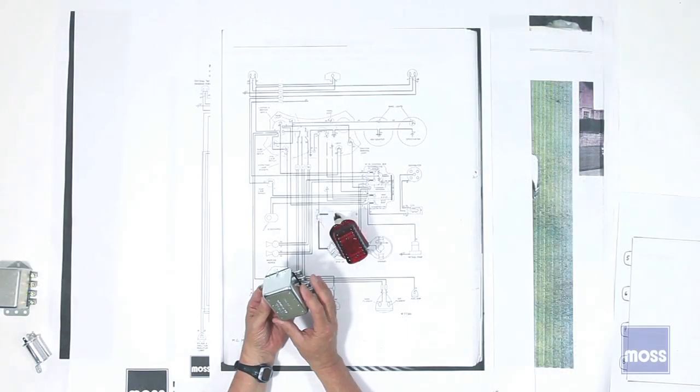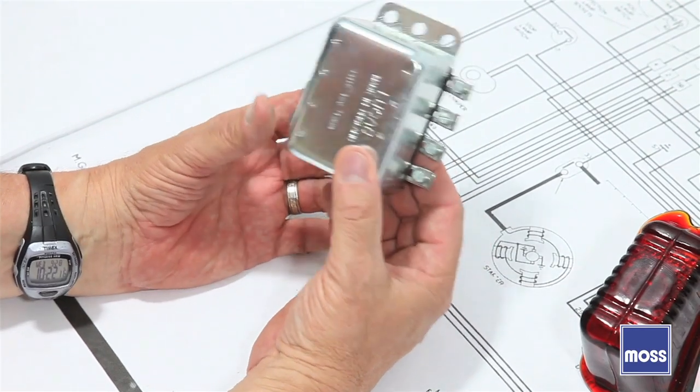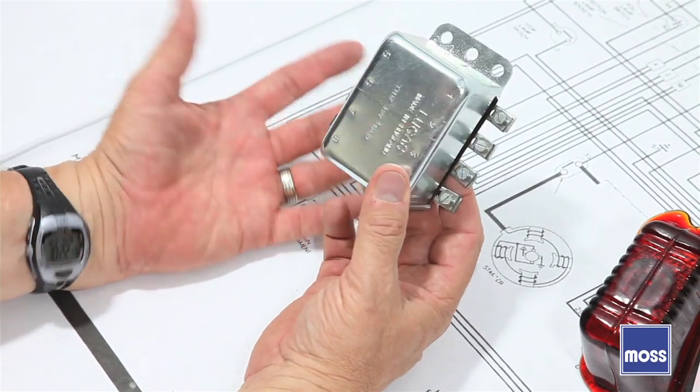This is a 141-400. This is the heart and soul of the turn signal system in some of our classic British cars in the mid-1950s.